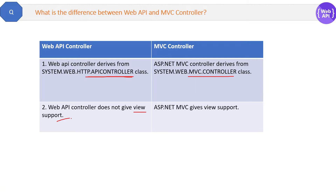The main difference is that Web API controller does not give view support. Web API does not need views, so that's why they don't provide view support. ASP.NET MVC gives view support because in MVC applications we have views, and the controllers provide that view support. So that is the difference between these two.